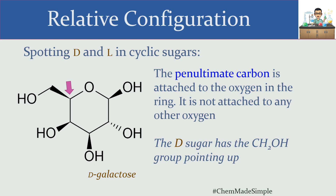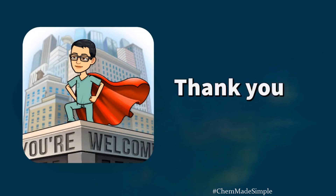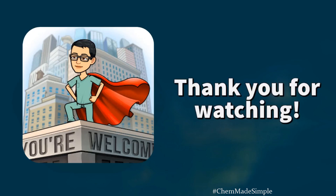So we took a look at assigning relative configurations — D and L — to both amino acids and carbohydrates today. Thank you so much for watching. Please support this channel by hitting the subscribe button, and hopefully you'll like this video enough to hit the like button as well.